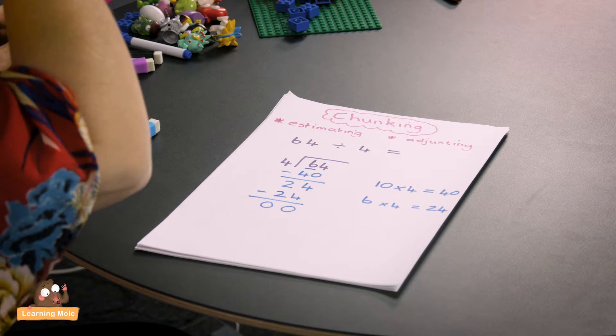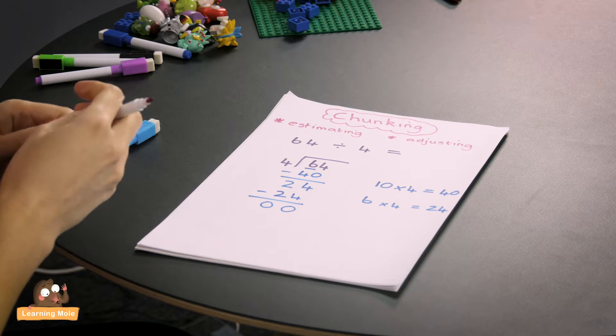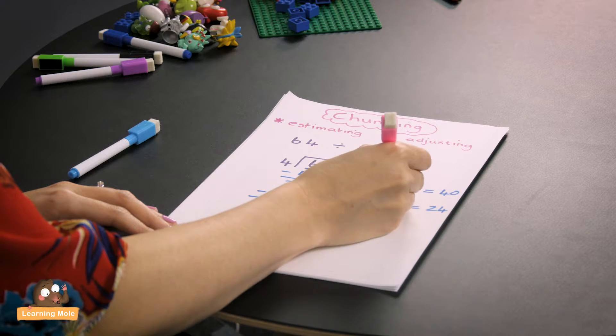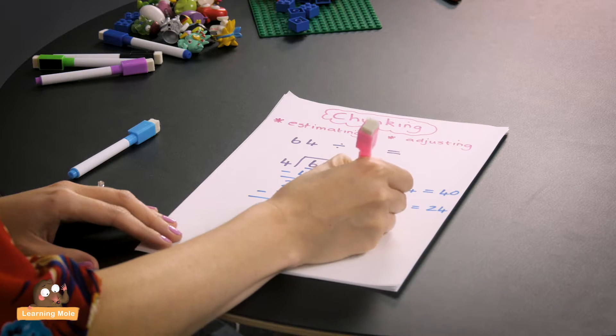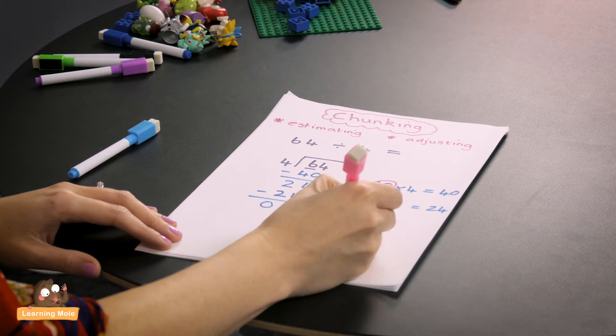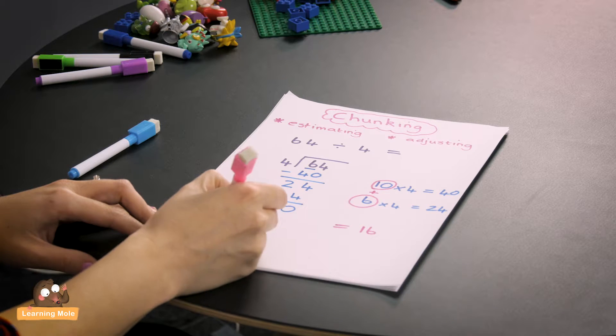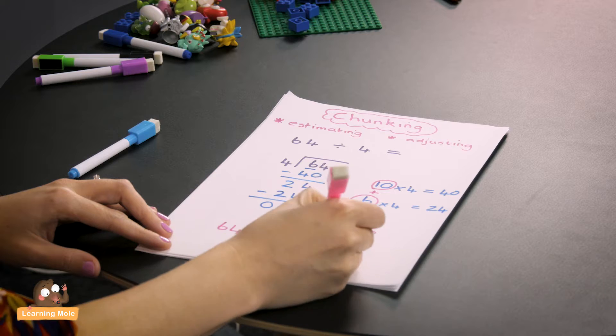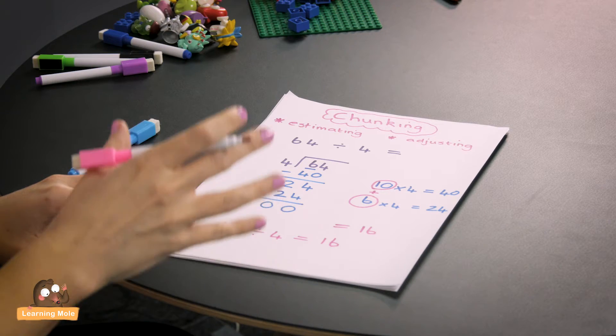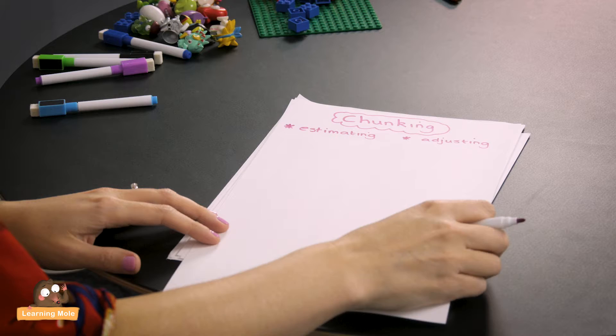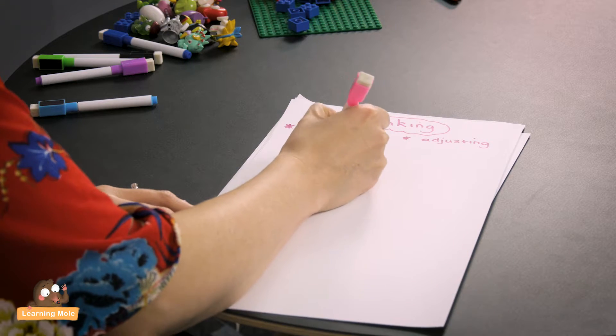Now you're going to come to the end, which is finding out what the actual answer is. First of all you divided 10 divided by 4, then you divided 6, so you are going to add those up and your answer is 16. So 64 divided by 4 equals 16. It's a very simple method to help your child really understand that idea of division.